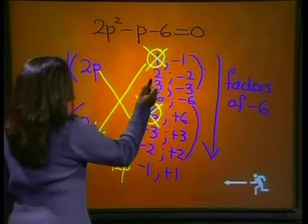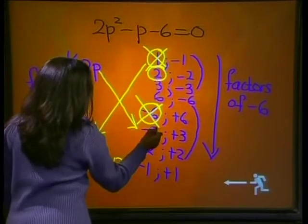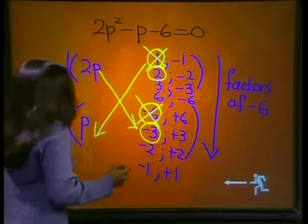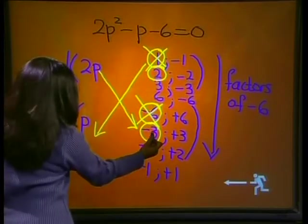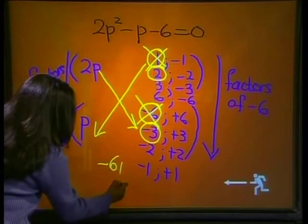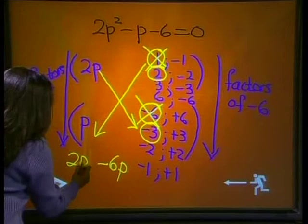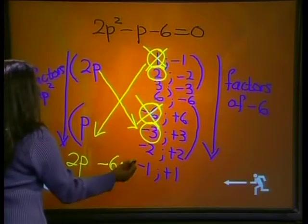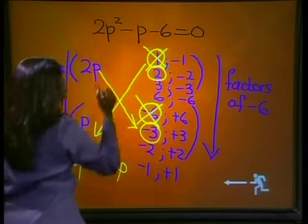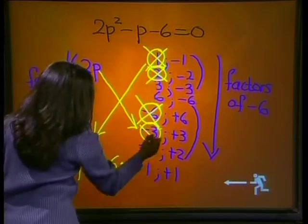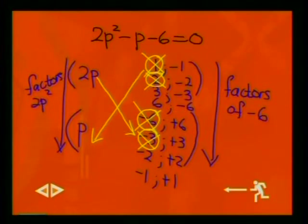Now let's use our second set of factors which is 2 and -3. 2p × -3 gives me -6p. 2 × p gives me 2p. 2p - 6p gives me -4p which is not the middle term again. So this set of factors is also not correct. Can you see that we use the same diagram without writing every possible set of factors?